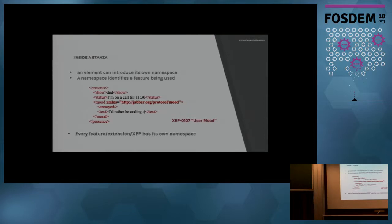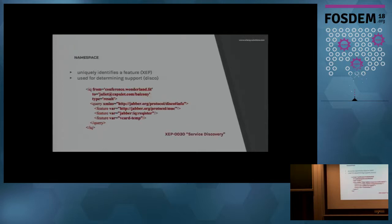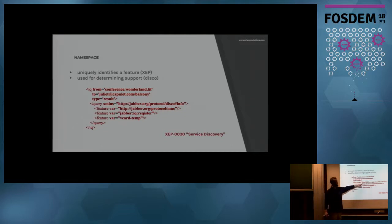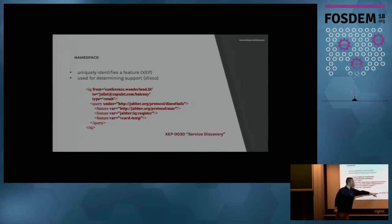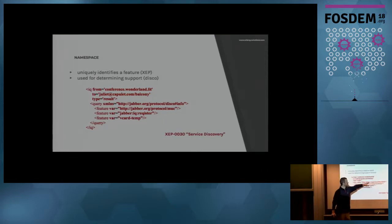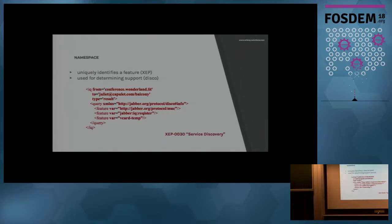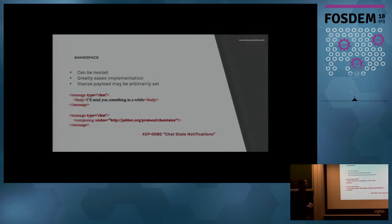Because every feature has a namespace, if we ask a server what features it supports, it replies by sending a list of namespaces — which maps one-to-one to the list of XEPs that server implements. In XMPP parlance this is called service discovery, which is itself another XEP. This is the namespace of service discovery — 'disco info' — and this is the server's reply. I need to rush because there are quite a few slides ahead. Namespaces can be nested, because there can be namespaces within namespaces.